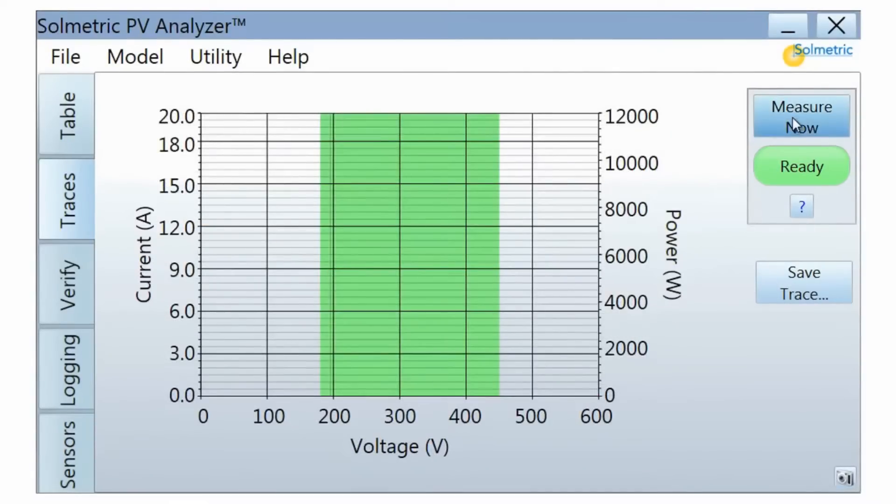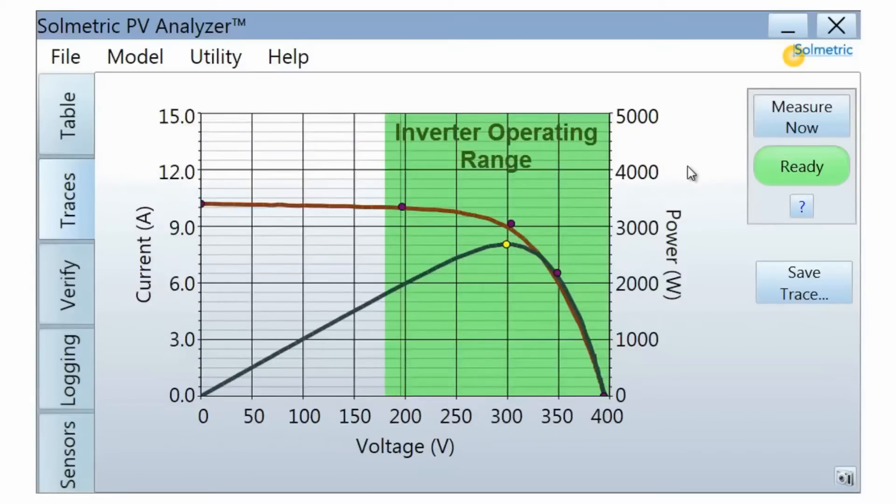The green shaded region indicates the inverter operating range. If the maximum power point is too close to one side of this region, there could be tracking problems at extreme temperatures or as the system ages.